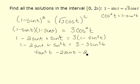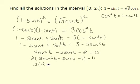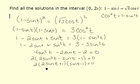Subtracting 3, minus 2 is equal to 0. We are now ready to factor this. We could factor out a 2, and we'd be left with 2 sine squared t minus sine t minus 1 equal to 0. This would further factor down into 2 sine squared t minus 2 sine t plus 1, and sine t minus 1 is equal to 0. We can check: we have 2 sine squared t minus 2 sine t plus sine t minus 1.